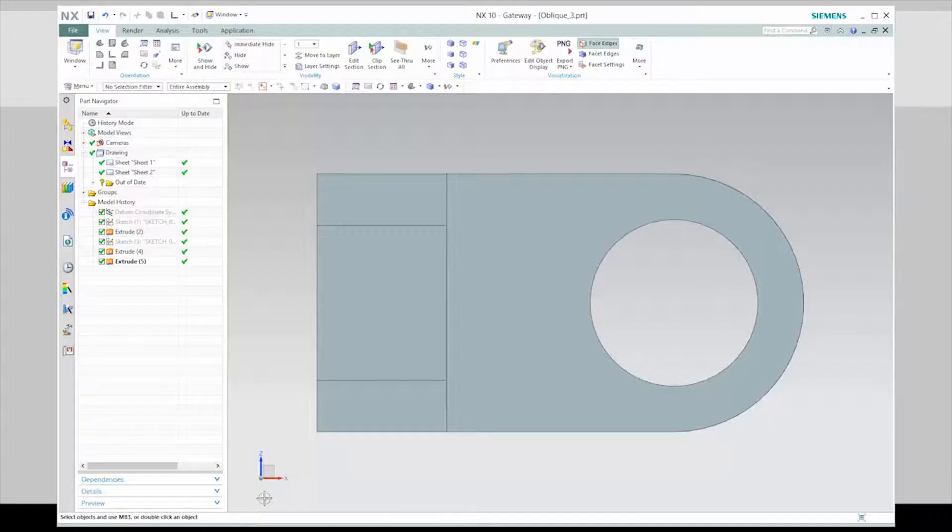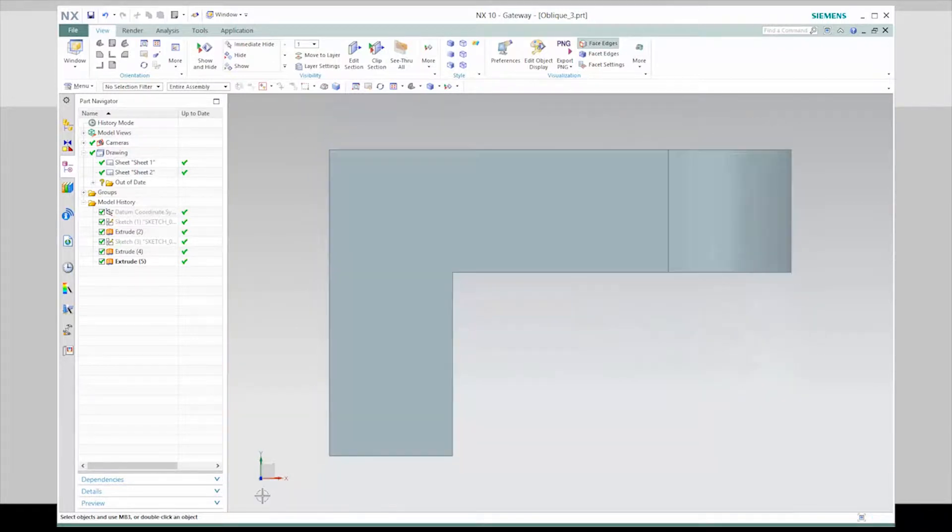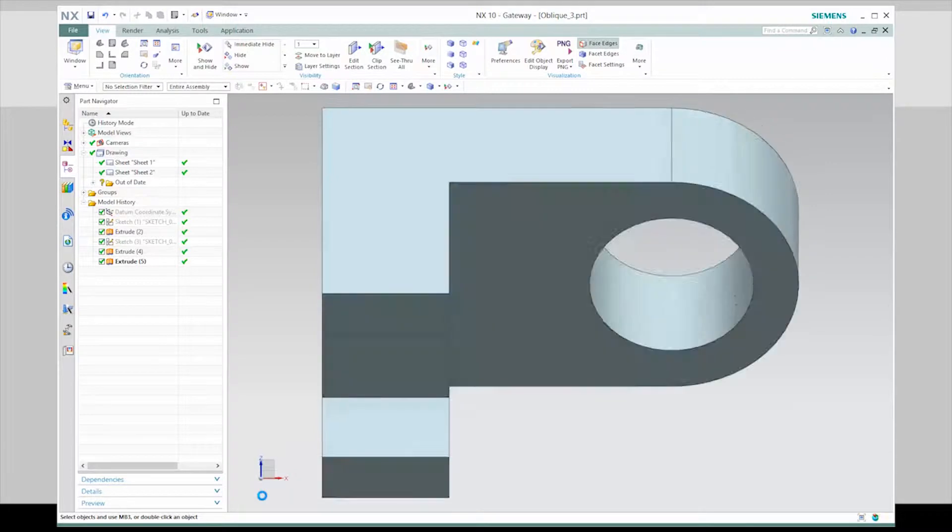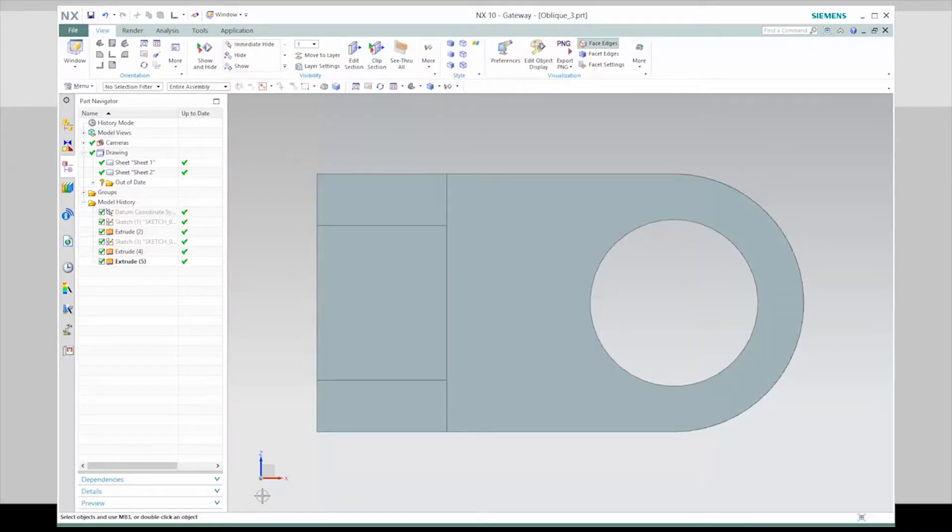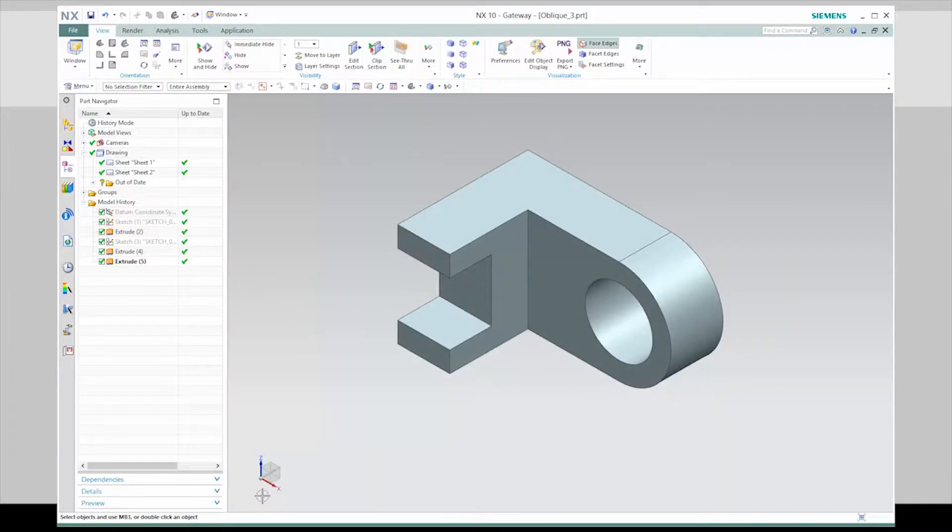Here is the object's front view. Here is the object's top view. Here is its right side view. Asking the Siemens NX system to show the part's isometric view, it looks like this.